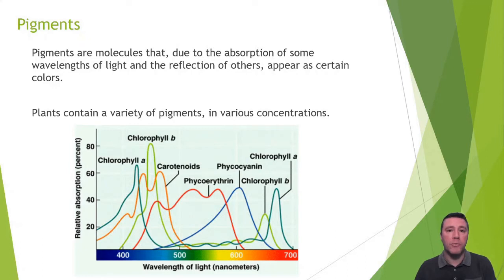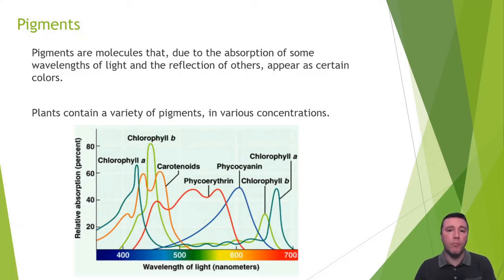Phycoerythrin appears red and absorbs green wavelengths of light. Phycocyanin appears blue, absorbing yellow and orange colors of light. Those three examples, along with many others like yellow xanthophylls, blue anthocyanins, and yellow-red betalains, are collectively referred to as accessory pigments.